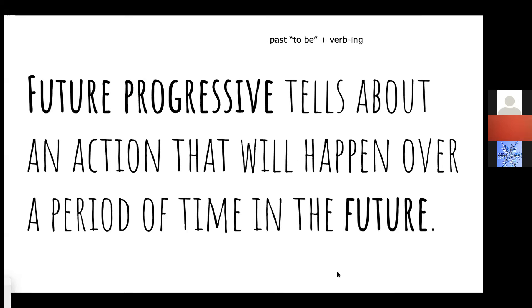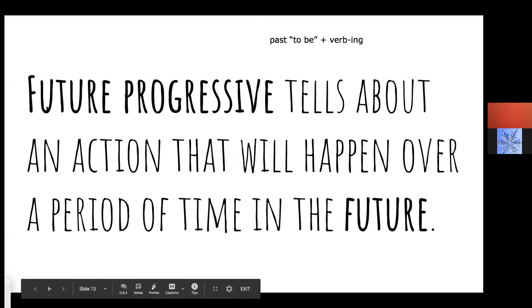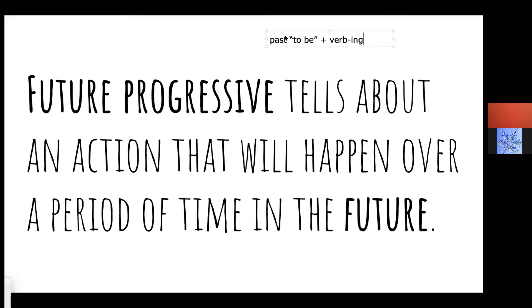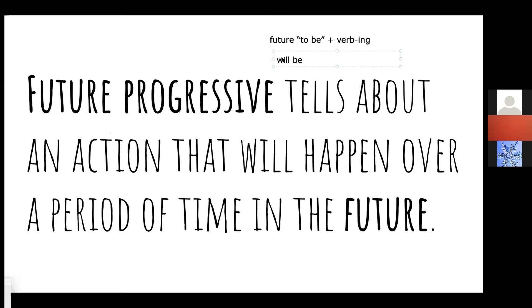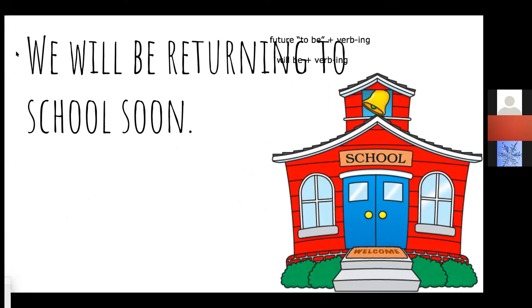Now we're going to talk about future progressive. We've done present — happening now — and past — already happened — and future, which will be happening. To form a future progressive, instead of the past tense of 'to be,' we need the future tense. The future of the verb 'to be' is simply 'will be,' plus a verb with the '-ing' ending. Let's look at an example: 'We will be returning to school soon.'